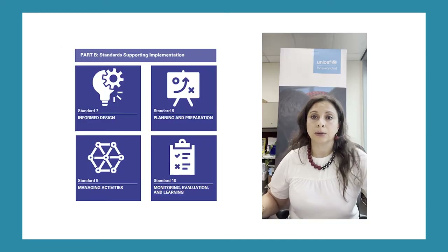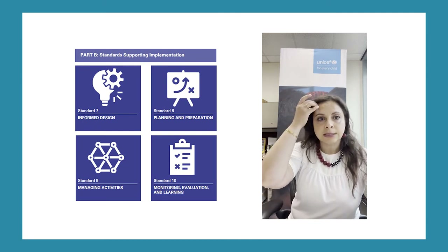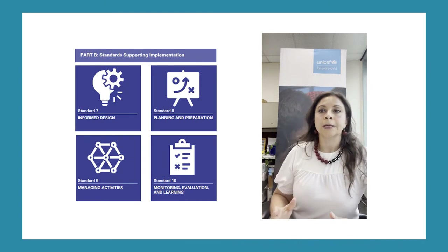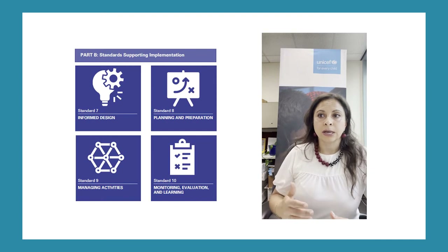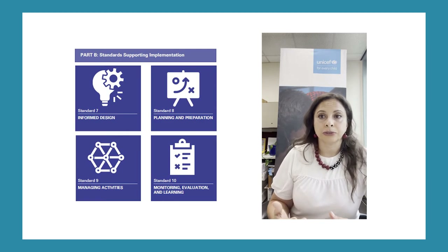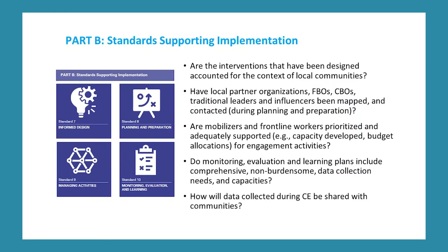Part B covers the standards that support implementation. These standards are specifically aligned to the project cycle — how we think about project design, participatory planning within the entire process, managing activities, as well as monitoring and evaluation. It aims to ensure that we're considering contextual analysis, conducting community mapping exercises, and thinking about how this informs the overall design of a new activity or program. It considers how to ideally engage leadership and representation within communities.